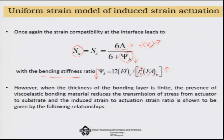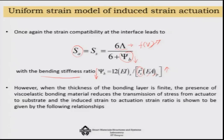So you can control bending through the passive design by choosing T_S² and I_S to achieve a low ψ_B, which gives a high S_A — meaning high strain. In the active sense, varying voltage varies λ and thus varies the active strain and the extent of bending. These are the two ways to control bending using the uniform strain model.